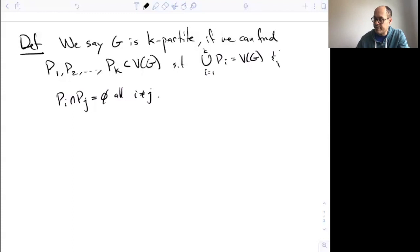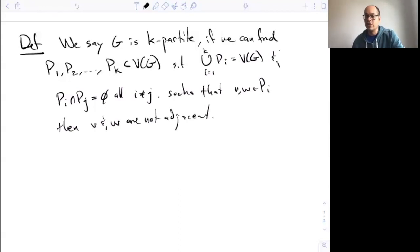Such that, as before, if you have a pair of vertices in one of the given PIs, then V and W can't be adjacent.